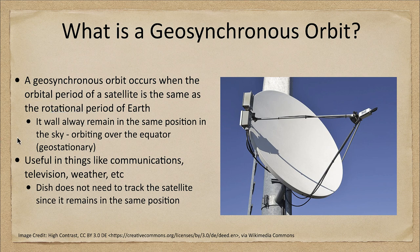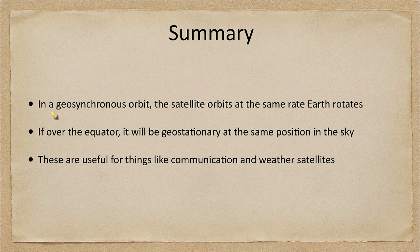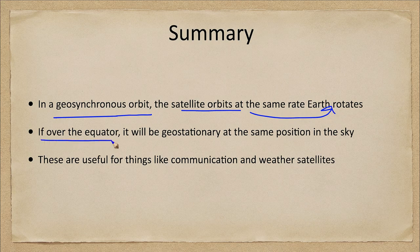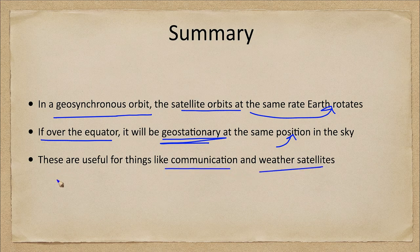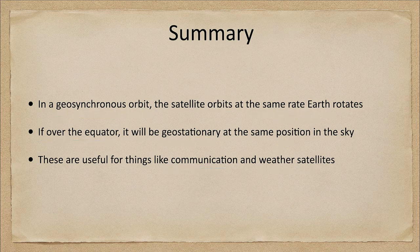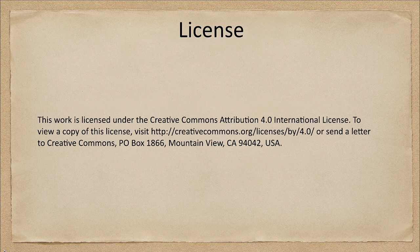To summarize: a geosynchronous orbit occurs when the satellite orbits at the same rate that Earth rotates on its axis. If this geosynchronous orbit is over Earth's equator, it will be geostationary and remain at the same position in the sky. These are useful for things like communication and weather satellites. That concludes this lecture on geosynchronous orbits. We'll be back again next week for another special topic in astronomy — have a great day everyone and I will see you in class.